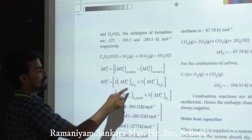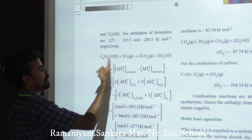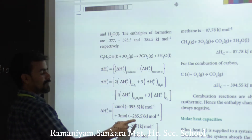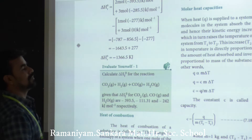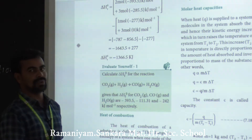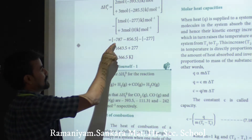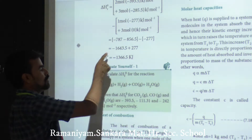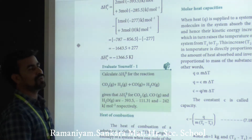Substituting values: product side = 2 × (−393.5) + 3 × (−285.5) = −787 + (−856.5) = −1643.5 kJ. Reactant side = 1 × (−277) kJ. So delta H = −1643.5 − (−277) = −1643.5 + 277 = −1366.5 kilojoules.